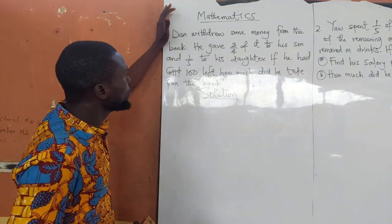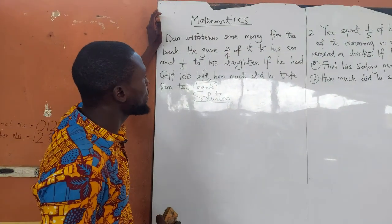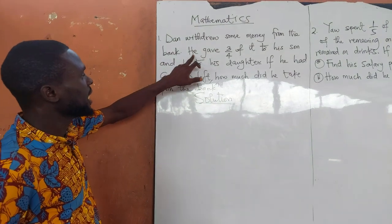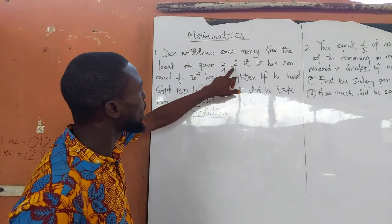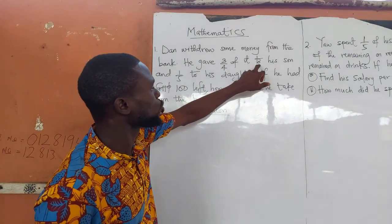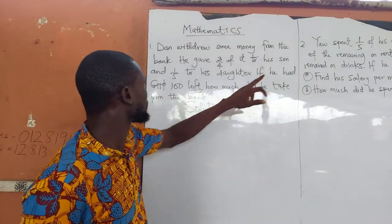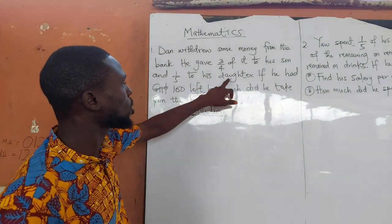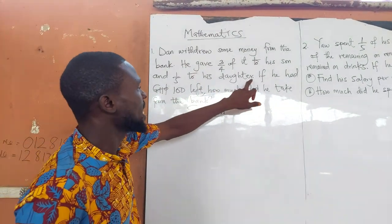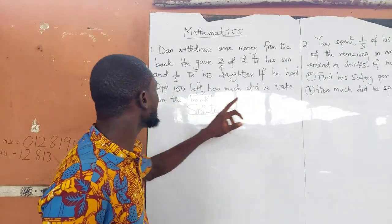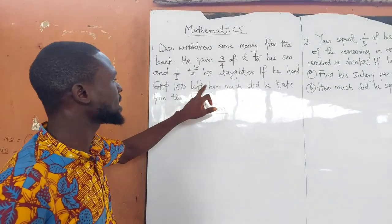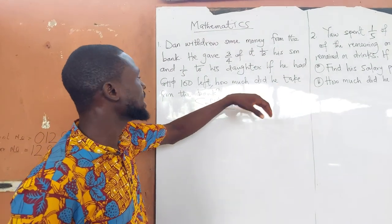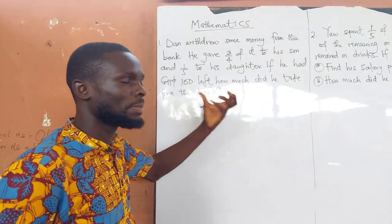Dan withdrew some money from the bank. He gave a quarter of it to his son and one fifth to his daughter. If he had 100 cents left, how much did he take from the bank?